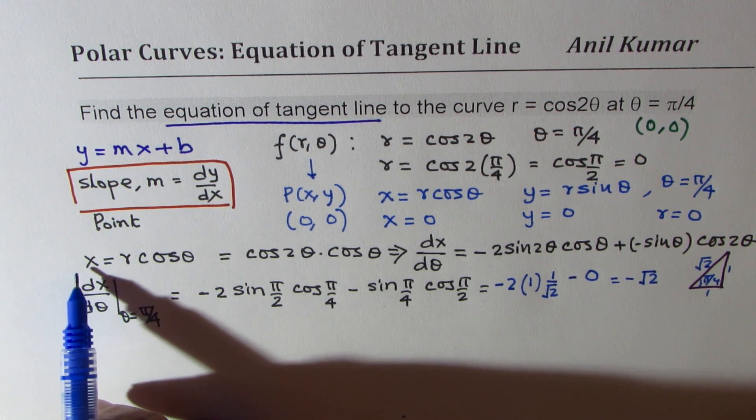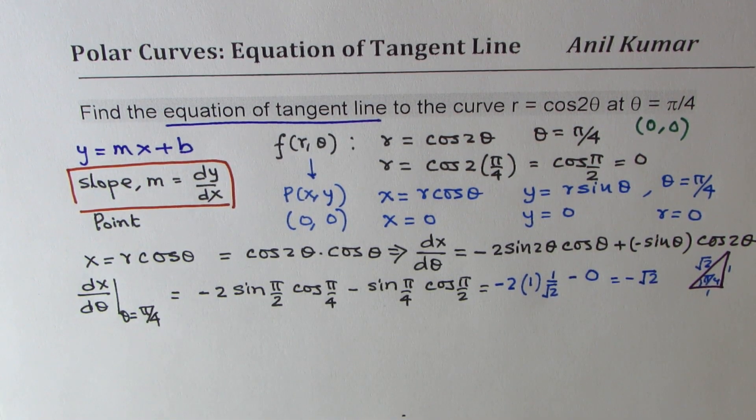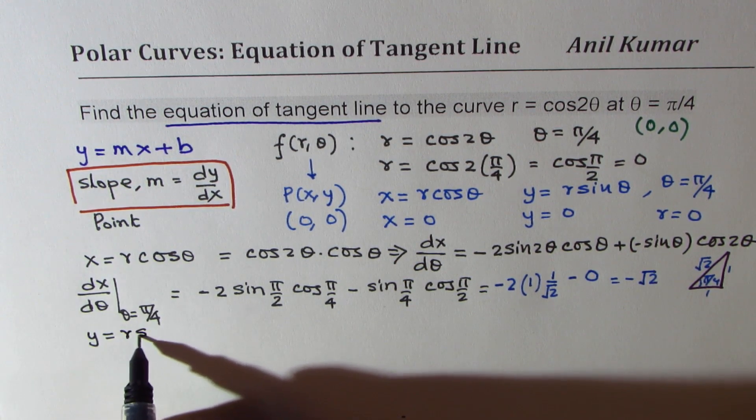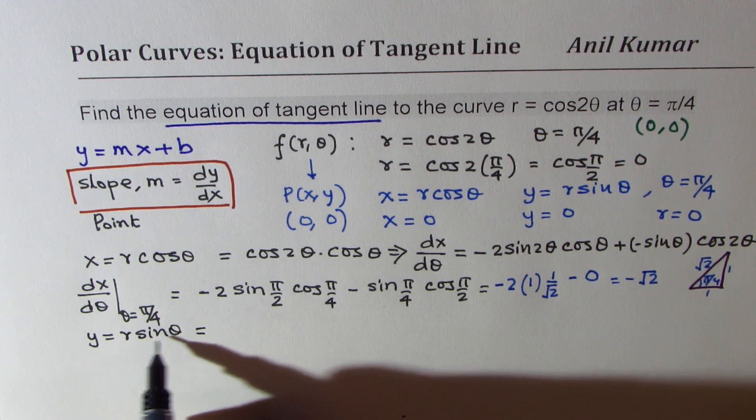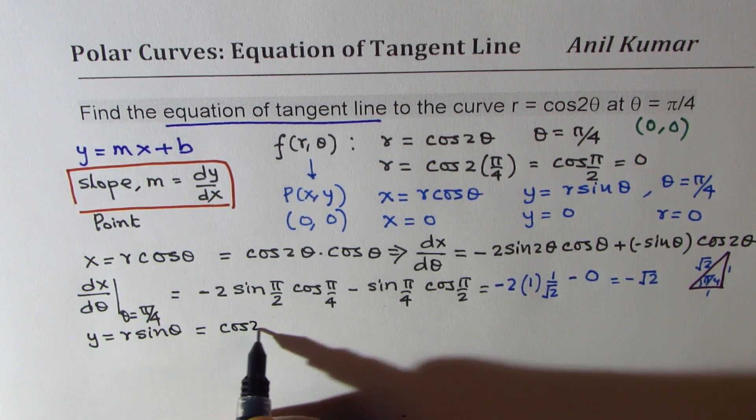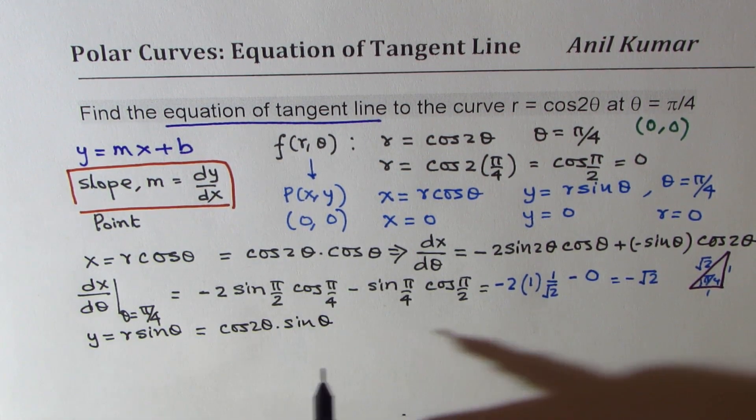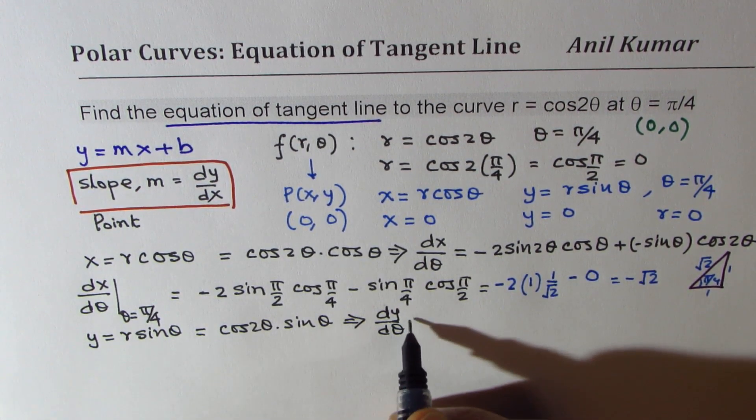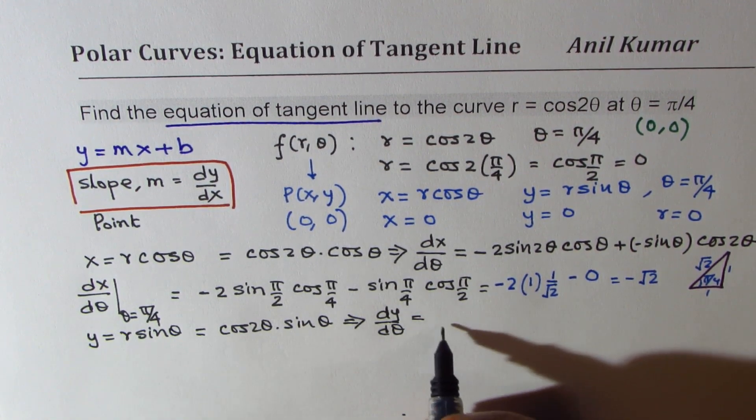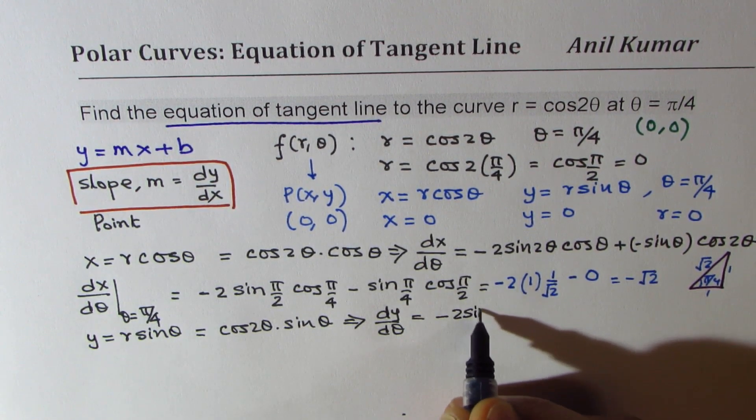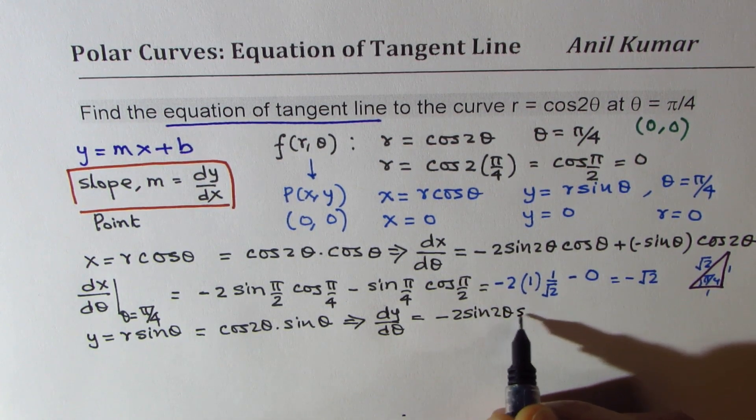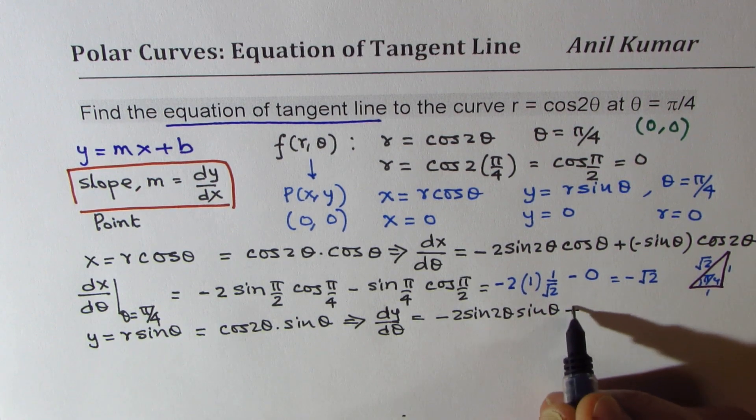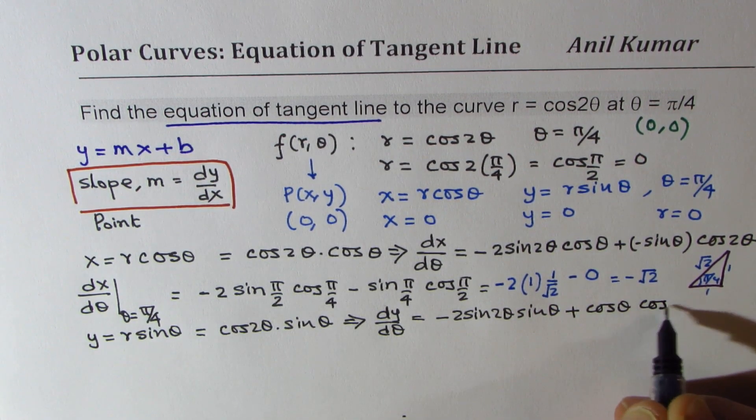Now let us calculate the value of dy d theta. We know y is equal to r sin theta. So doing the same thing, r is cos 2 theta times sin theta. If I take the derivative with respect to theta for y, applying the product rule, I get minus 2 sin 2 theta sin theta, and the derivative of sin theta is cos theta, so it becomes plus cos theta cos 2 theta.